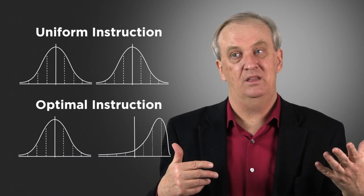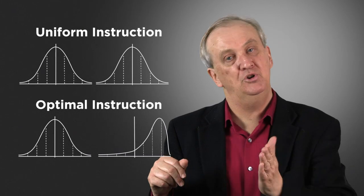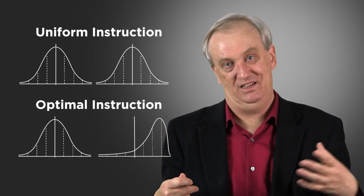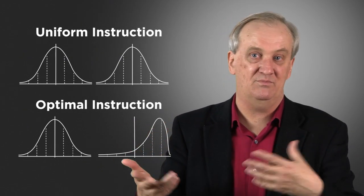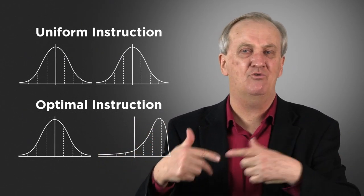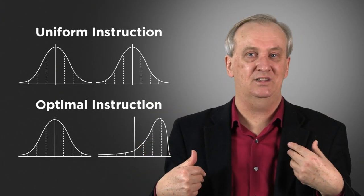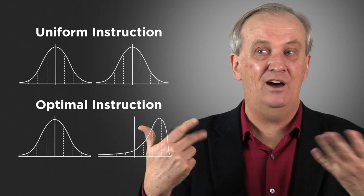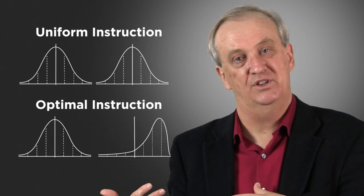So what Benjamin Bloom recommended is that with something he called optimal instruction, we could push the achievement curve to the right. And how would we do that? We'd allow flexibility, which is students could perhaps to some degree go at their own pace. We'd create group work where students help each other. We do one-to-one instruction. We give some students special attention. So he had a whole series of suggestions about how to push the achievement curve way over to the right.